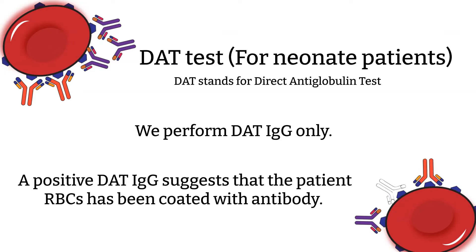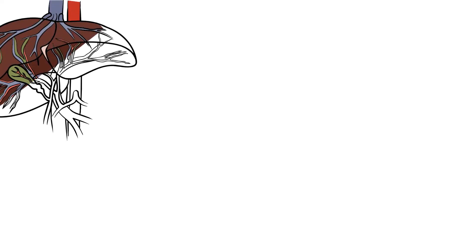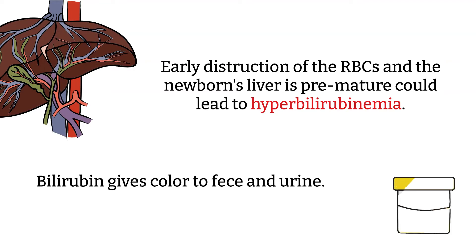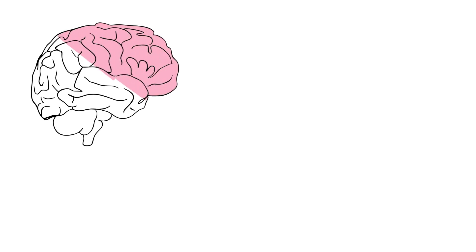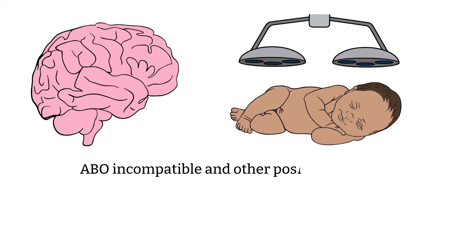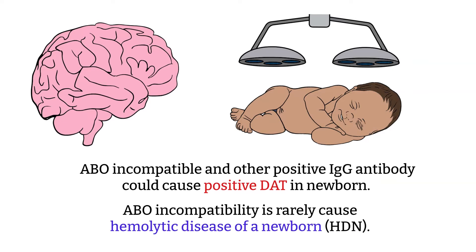However, we often see this in a baby of a blood type O mother. The anti-A and anti-B in the mother cross the placenta and attack the unborn RBCs, which causes early destruction of the red blood cells. Since the newborn liver is still premature, bilirubin could accumulate and lead to a condition called hyperbilirubinemia. The buildup of bilirubin in the newborn can be life-threatening. High levels of bilirubin can travel to the baby's brain and cause seizures and brain damage. But don't worry, because we can treat the baby with light therapy. Besides ABO incompatibility, which is the most common cause of DAT positive in a newborn, other IgG antibodies that the mother has can cause a positive DAT as well. Even though I'm using ABO incompatibility as an example, ABO incompatibility rarely causes hemolytic disease of the newborn.